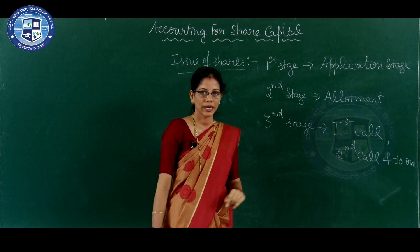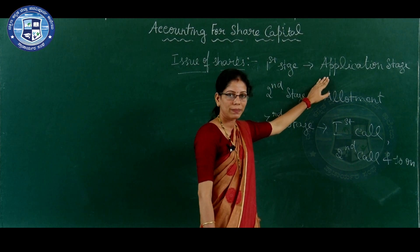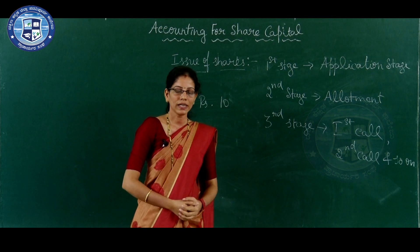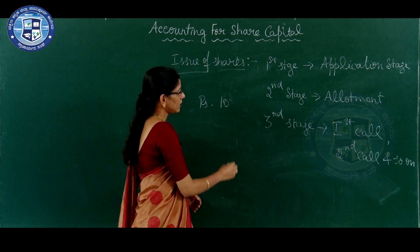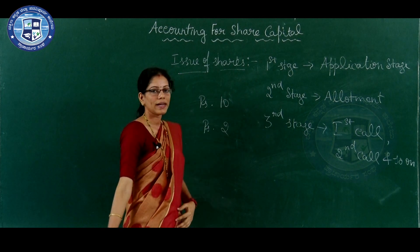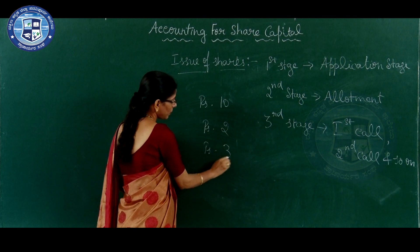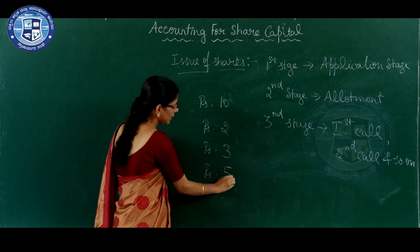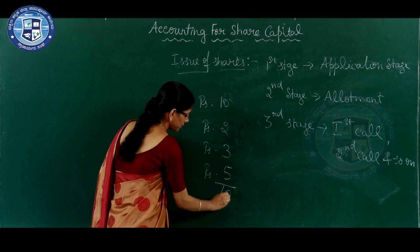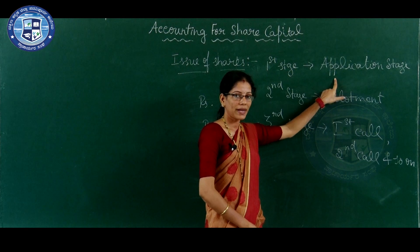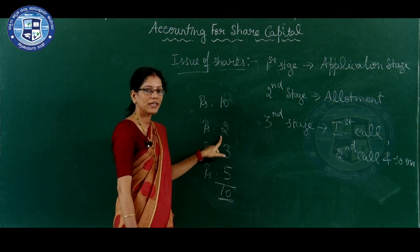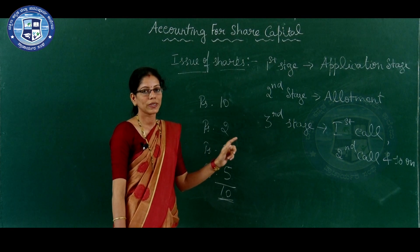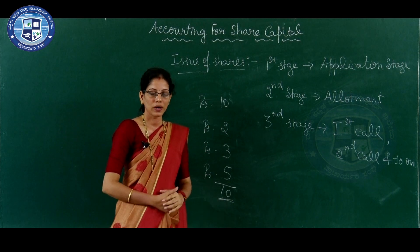Now let us study one by one. In my previous example, per share it costs rupees 10. The company generally does not collect rupees 10 at once - it collects it in installments. For example, in the first installment it collects rupees 2 and in the second installment it collects rupees 3, and in the last stage it collects the remaining rupees 5. Application money means money received at the time of receiving applications. In this example, 1 lakh shares into rupees 2 equals rupees 2 lakh received. That money is called as application money.